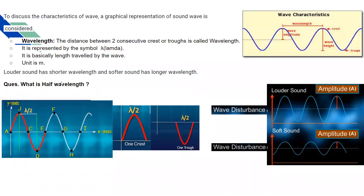Now let us continue with the first characteristic of the wave, which is known as the wavelength. Wavelength means the distance from one point on a wave to the corresponding point on the next wave. It is the distance between two consecutive crests and troughs, and it is known as the wavelength. Wavelength is represented by the symbol lambda.